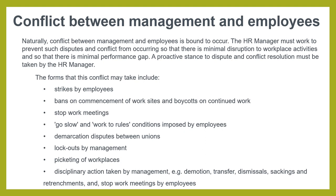Forms of industrial action include consignment of work sites and picket lines on continuous work. We will look at work-to-rule meetings, go-slow tactics, and hold-to-rules conditions imposed by employees.